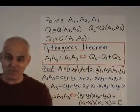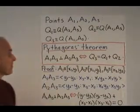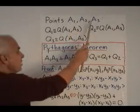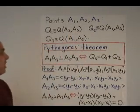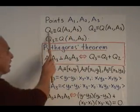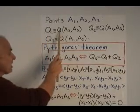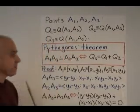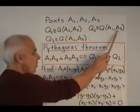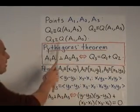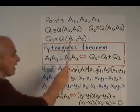Historically, Pythagoras' theorem comes first. So let's look at that one first. We have three points, a1, a2, and a3. And in general, we'll use the notation that q1 represents the quadrance between a2 and a3, q2 represents the quadrance between a1 and a3, and q3 represents the quadrance between a1 and a2.